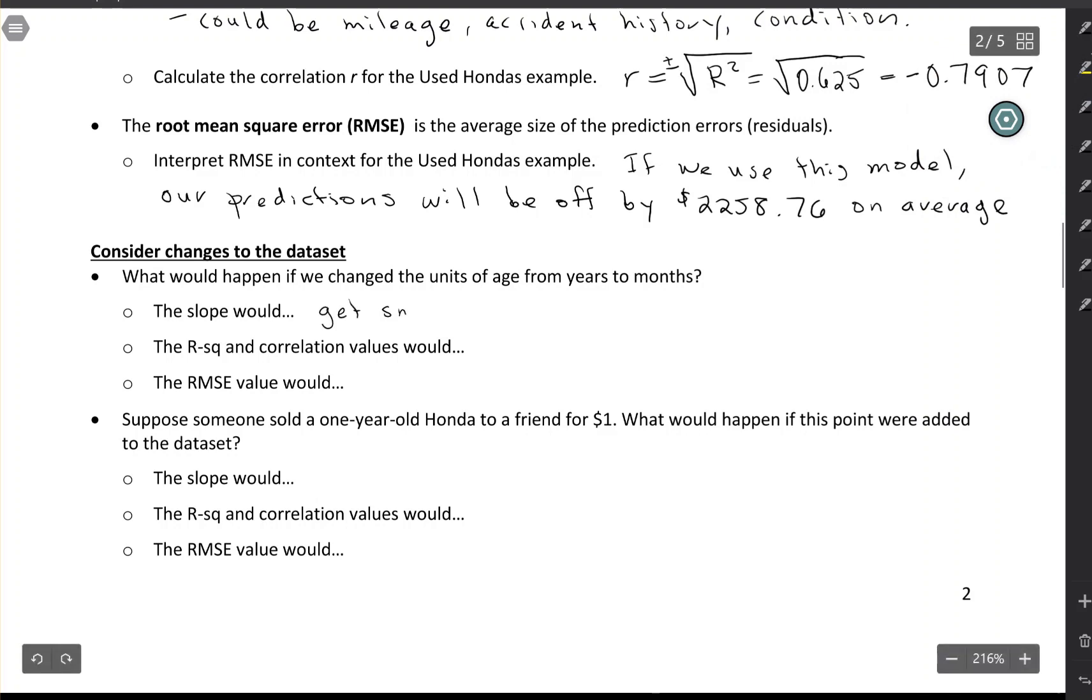The slope would get smaller. And just as something to keep in mind, when you're talking about slope, units matter. The R squared and correlation values would stay the same. So if you're talking about R squared and correlation, units don't matter.